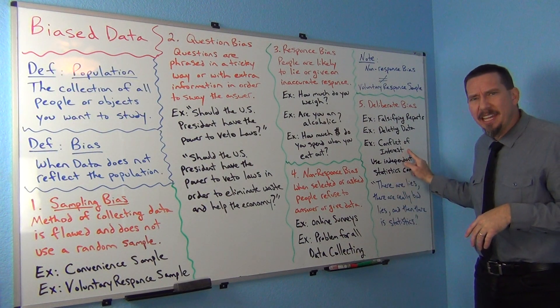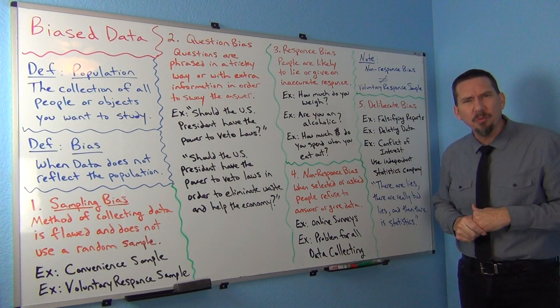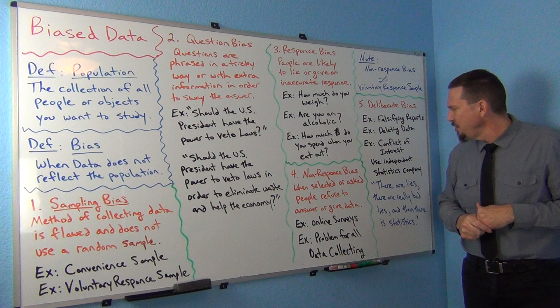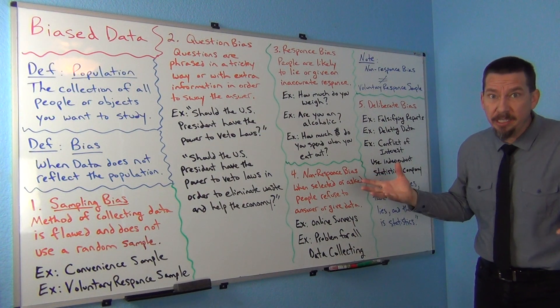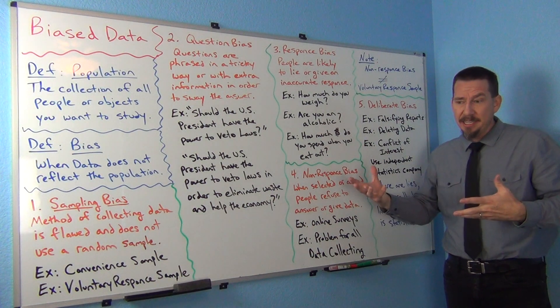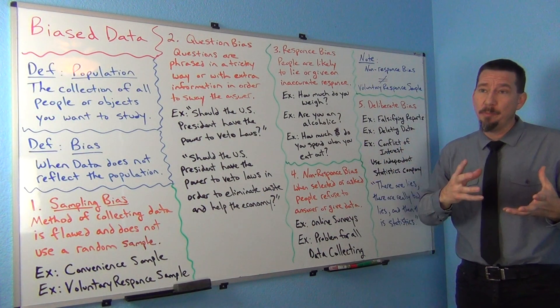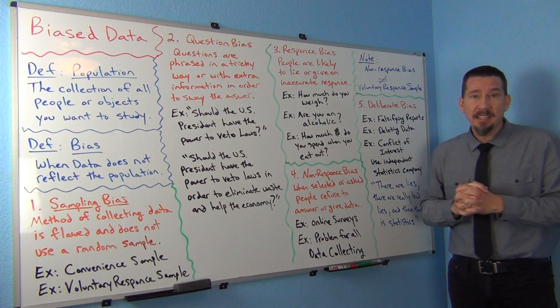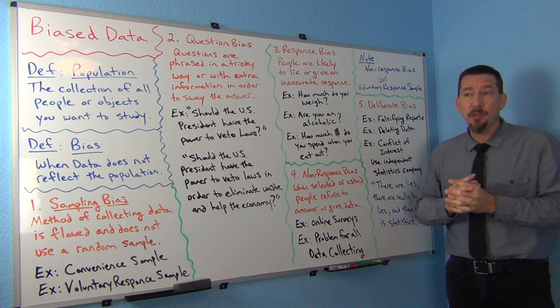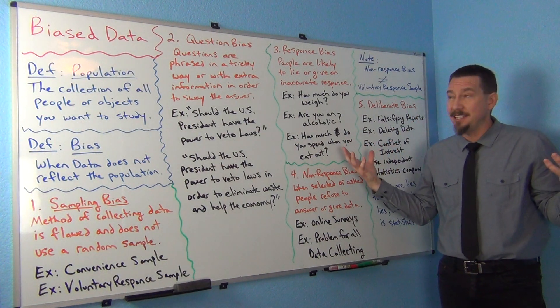This is why independent statistics companies are really, it's better to use an independent statistics company oftentimes. First of all, they know what they're doing. How many businesses sometimes don't have really good people, maybe it's a small business and they don't have money to really pay for data scientists or statistics people. This is also why every business in the world now is scrambling to get data scientists. That's why if you're taking this class, this is like you're stepping on that path.